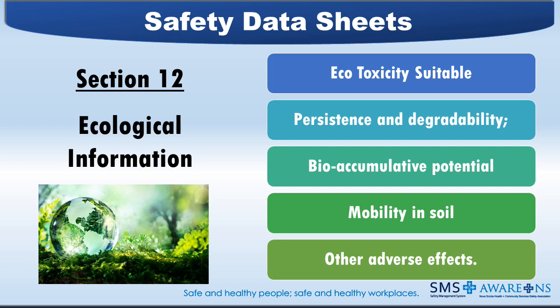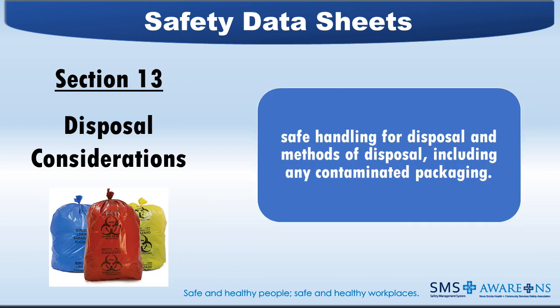Section 12 — Ecological Information: while the heading of this section is required to preserve the SDS 16-heading format, content within this section is optional. The content consists of ecotoxicity — both aquatic and terrestrial if applicable — persistence and degradability, bioaccumulative potential, mobility in soil, and other adverse effects. Ecotoxicity refers to the potential for biological, chemical, or physical stressors to affect ecosystems. Bioaccumulation refers to the accumulation of substances such as pesticides or other organic chemicals in an organism, occurring when an organism absorbs a toxic substance at a rate greater than that at which the substance is lost. Section 13 — Disposal Considerations consists of information on safe handling for disposal and methods of disposal, including any contaminated packaging.